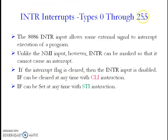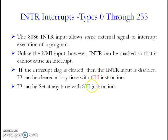You can divide INTR interrupts from type 0 to 255, so some external signal may be allowed to interrupt the 8086 microprocessor. The instructions used to mask and unmask the INTR input are the CLI instruction and STI instruction.